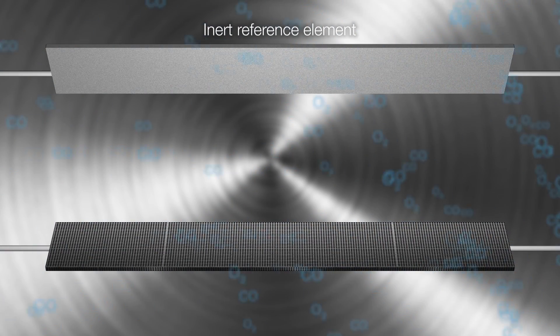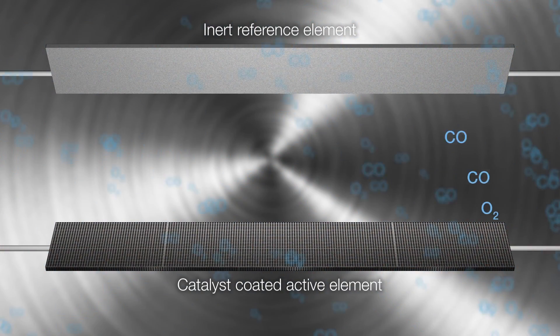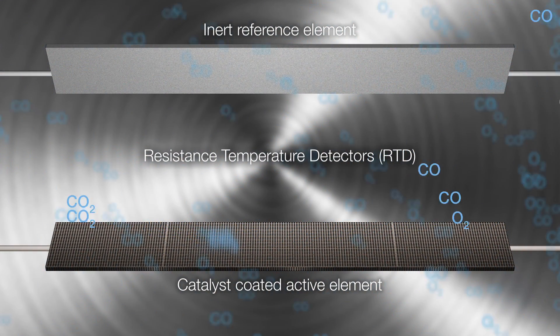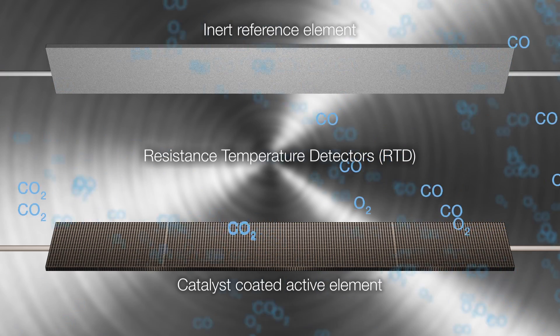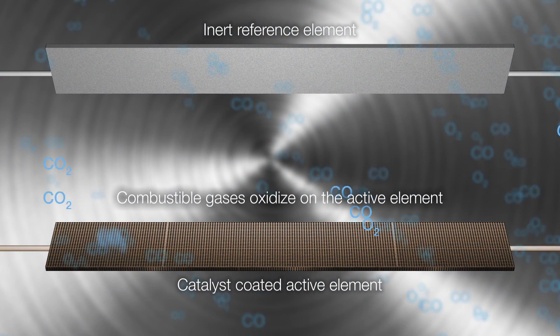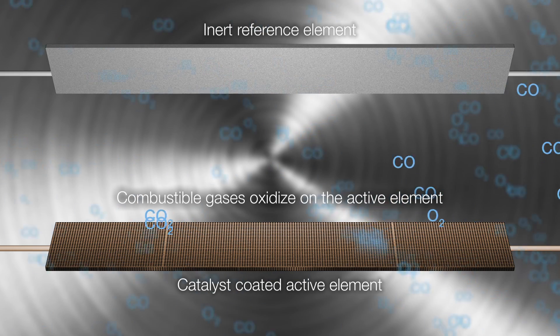The COE sensor consists of an inert-coated reference element and a catalyst-coated active element. Both elements are resistance temperature detectors, or RTD. As the sample gases flow by the sensor, the combustible gases oxidize on the surface of the active element.